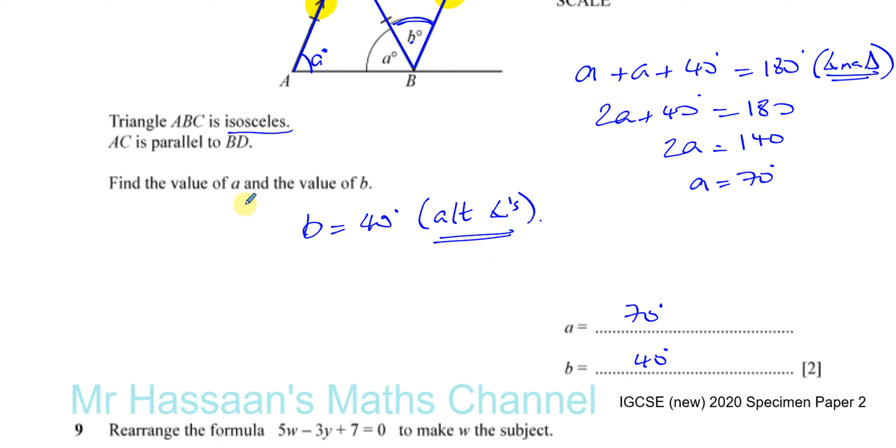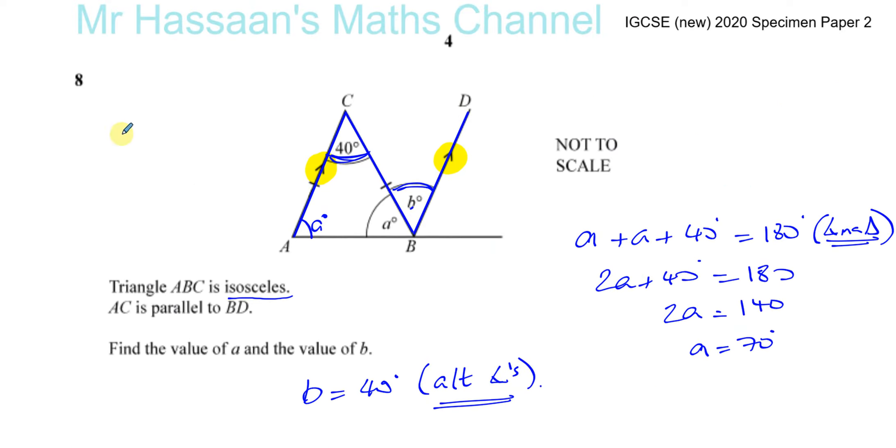There's also other ways of finding it. There's not always one way of finding angles when you're dealing with angle questions. Sometimes there's numerous ways of doing so. For example, what we could have said was angle A plus B and angle A, they are called interior angles. They add up to 180.